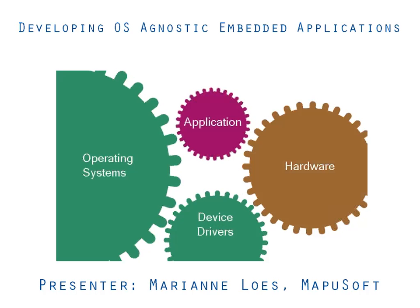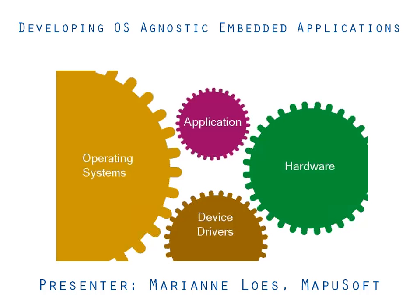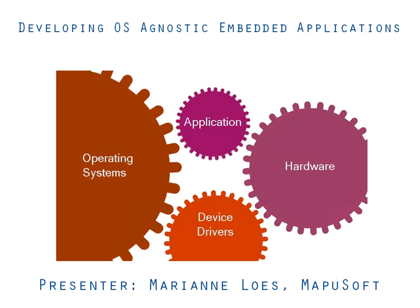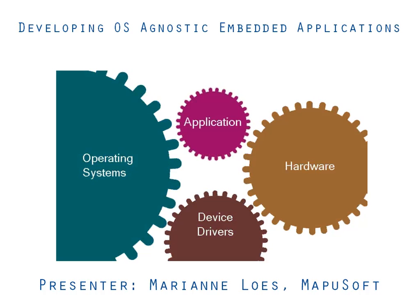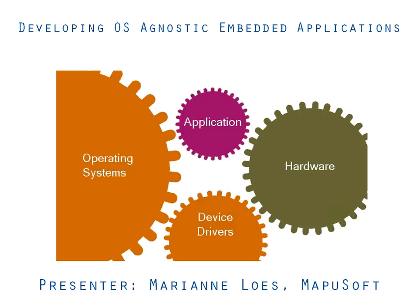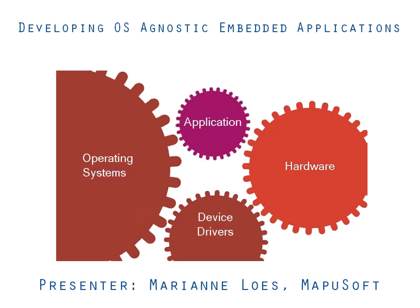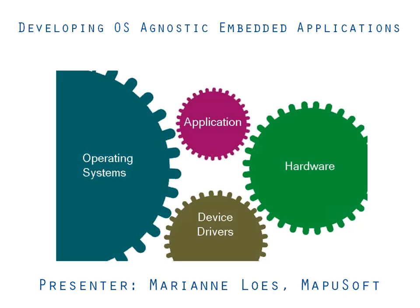Traditionally, development teams put a lot of effort, time, and money into completely re-architecting the application and platform components for the next generation product. With the recent economic downturn and constantly changing platform environments, engineers must seek alternatives to traditional development and take a serious look at abstraction solutions to ensure that their software is not tied to specific OS hardware and devices.